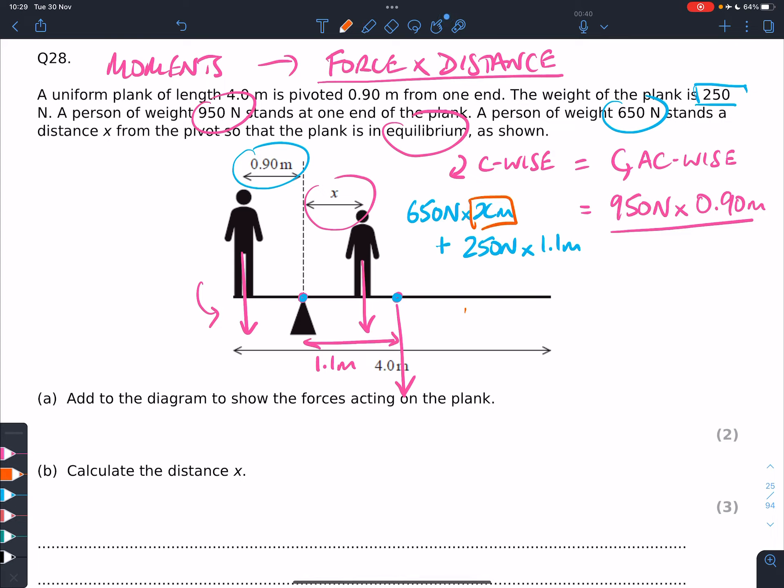First thing I'm going to do is I'm going to leave 650 newtons, times x metres, on this side. And I'm going to take the other guy across to the other side, and we'll have 950 newtons, times 0.90 metres.